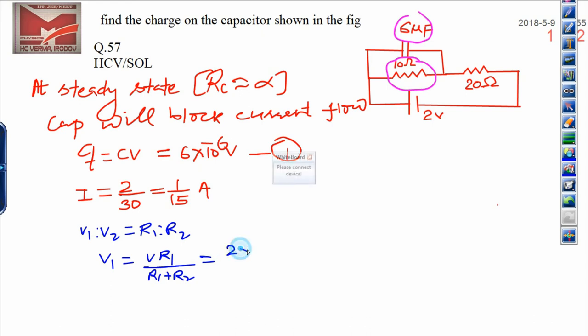Total voltage is 2 and R₁ resistor you can see here is 10, divided by total resistance 10 plus 20, that will be 30. Cancel out, it will be 2/3 volt.